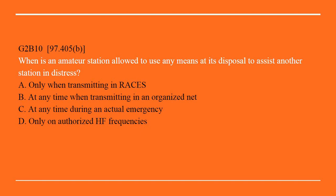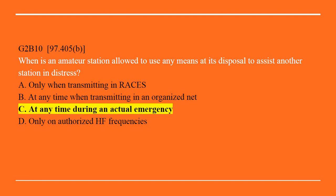G2B10: When is an amateur station allowed to use any means at its disposal to assist another station in distress? A. Only when transmitted in RACES. B. At any time when transmitting in an organized net. C. At any time during an actual emergency. Or D. Only on authorized HF frequencies. Correct answer here is C: At any time during an actual emergency.